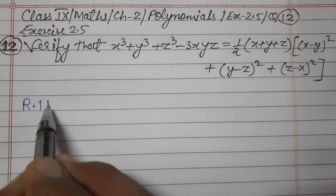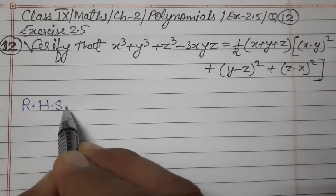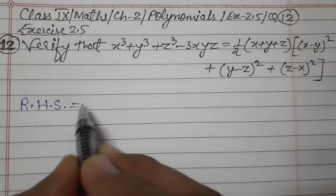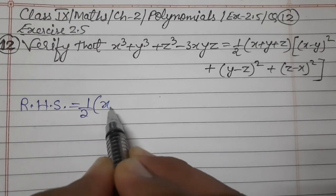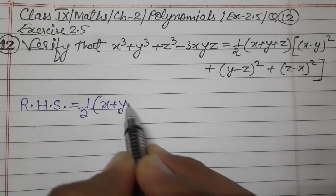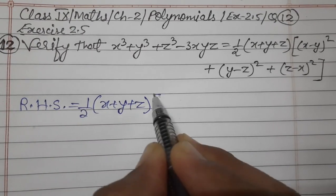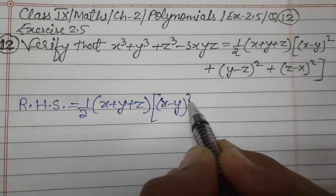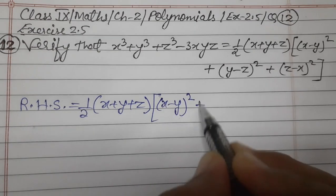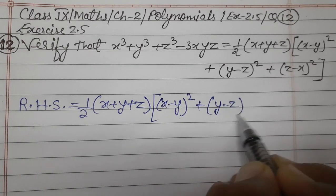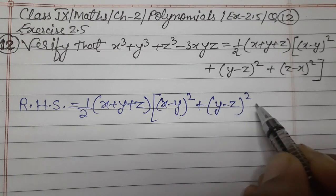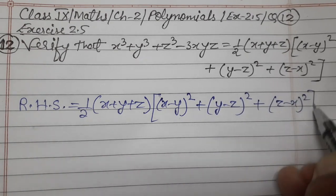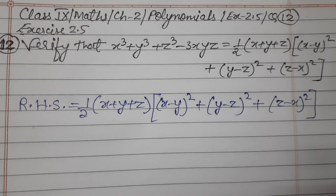Starting from RHS: RHS is half(x + y + z) multiplied by [(x - y)² + (y - z)² + (z - x)²]. Clear?